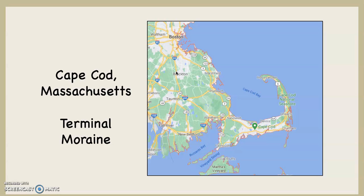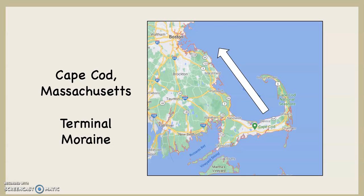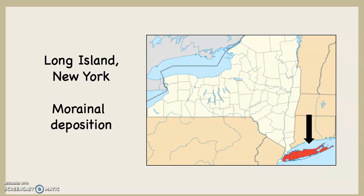Cape Cod, Massachusetts — you see that hook right there? Cape Cod is a terminal moraine. You can imagine what happened: the glacier came down, shoved all that material along its snout, and then as it receded, it backed up. That material doesn't follow it back — it just stays there. The result is the very famous Cape Cod. Long Island, New York — highlighted with the black arrow in red, right off to the east of New York City — that is also morainal deposition.